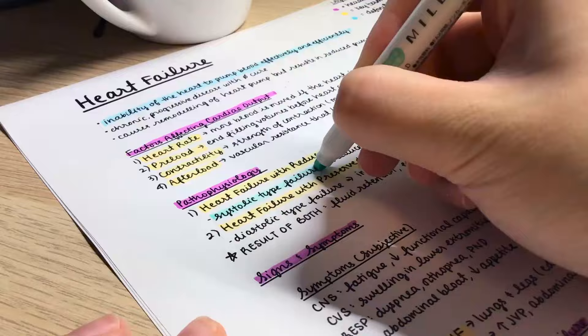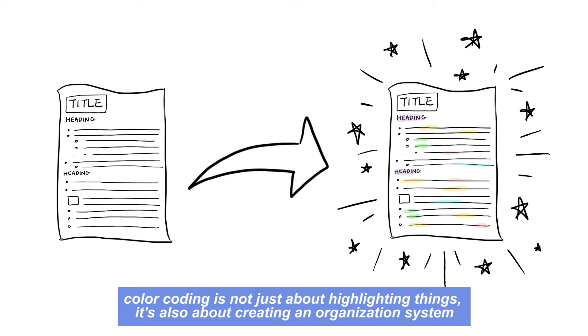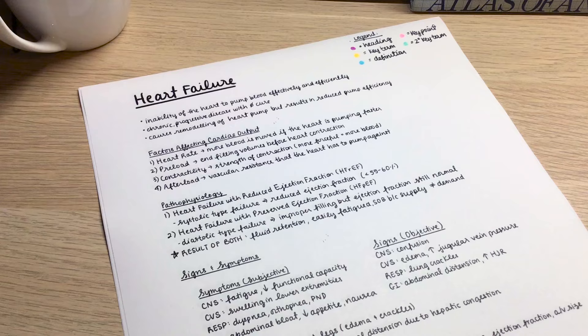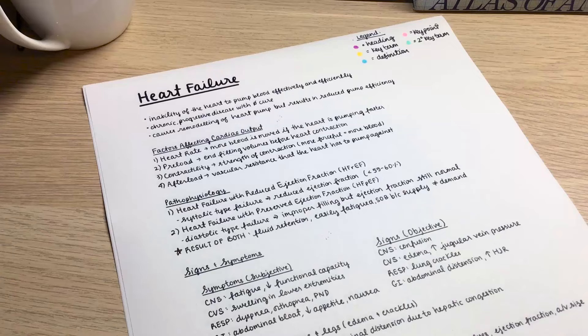Hey guys, it's Janice, welcome back to my channel. In this video I'm going to talk about how you can effectively color code and organize your study notes. Why is color coding important at all? Not only does it make your notes look more lively, it also helps you organize your notes and make certain pieces of information stand out better so you can remember them more effectively.